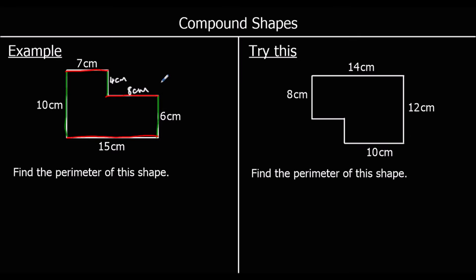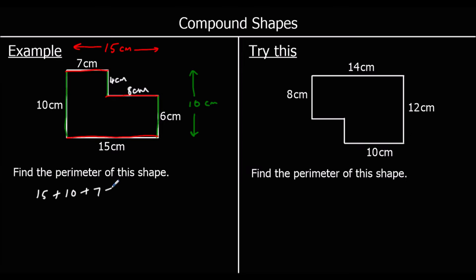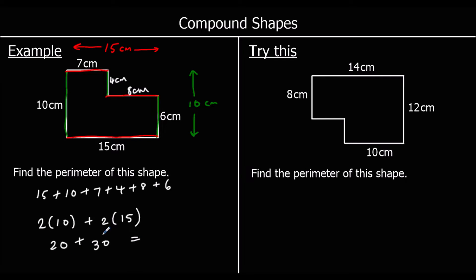We didn't actually need to work those individual lengths out, because if we know the total top is 15 we can just use 15, and since the whole side must equal 10 we can just use 10. So starting at 15: 15 plus 10 plus 7 plus 4 plus 8 plus 6 — or more simply, we've got two 10s and two 15s. Two 10s are 20, two 15s are 30, so 20 plus 30 is 50 cm. We measure perimeter in centimetres as it's a distance.